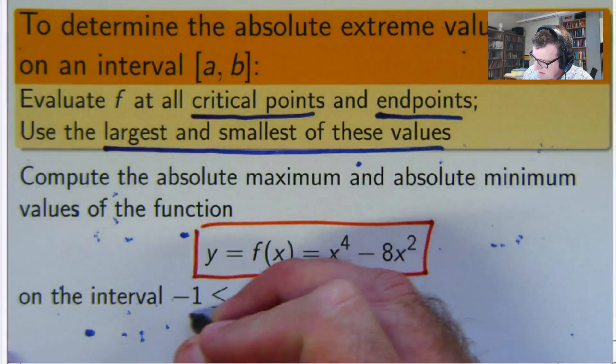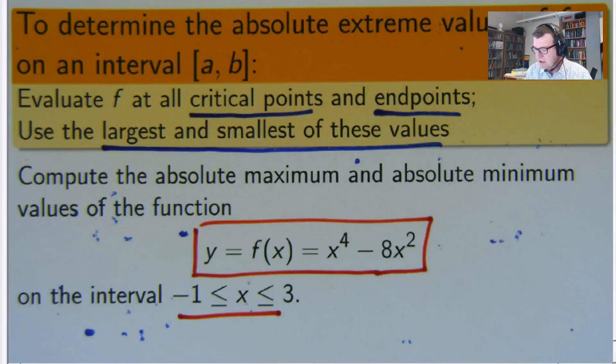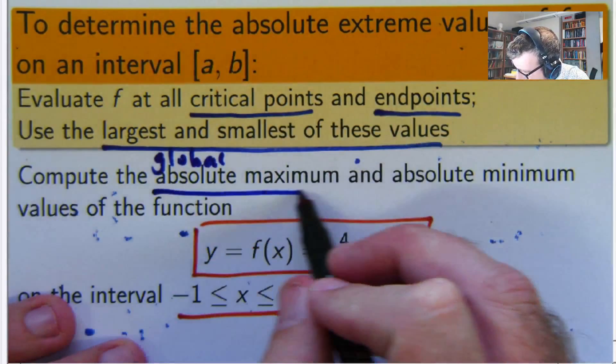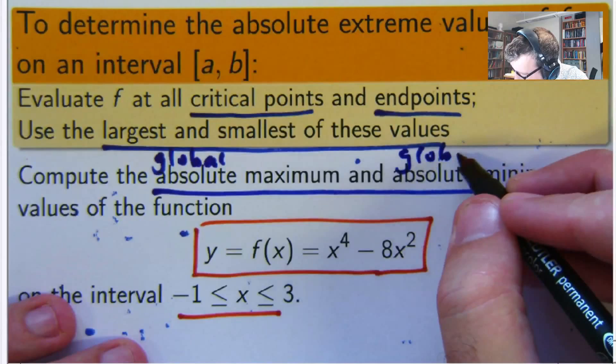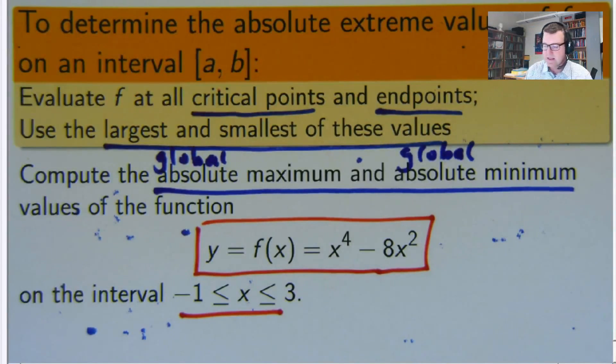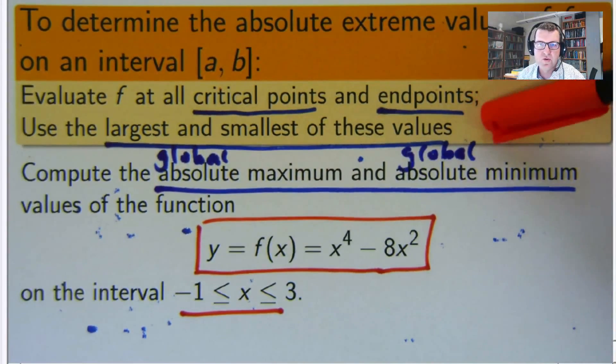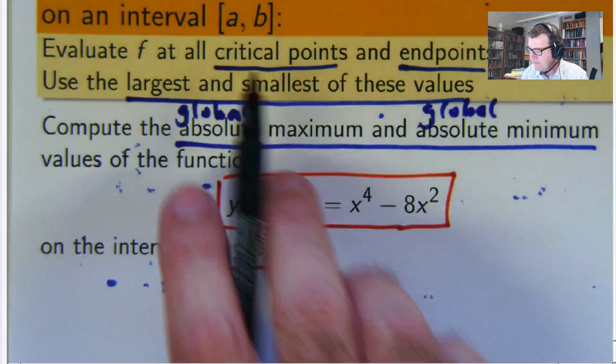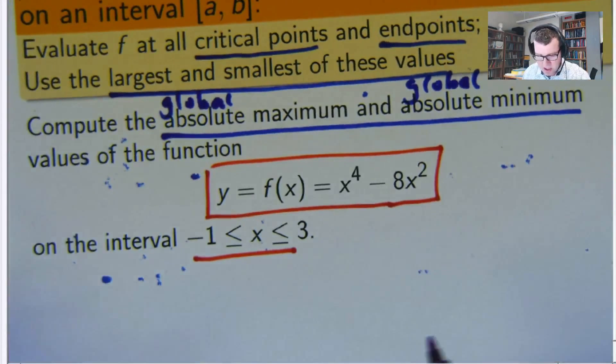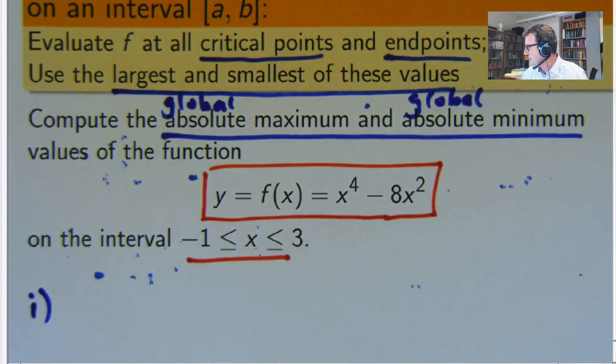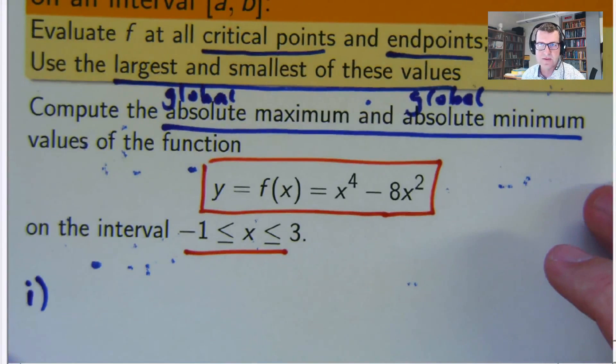Here's our function, here's our interval. We are asked to compute the absolute or global maximum and global minimum of this function on this interval. Let's use this algorithm to step through it. The first thing - evaluate f at all the critical points and the endpoints. I'm going to compute the critical points first. Remember, critical points of functions occur when the derivative is set to zero.